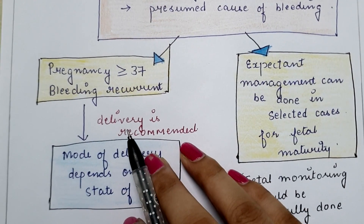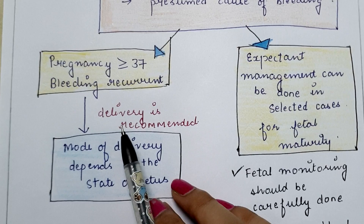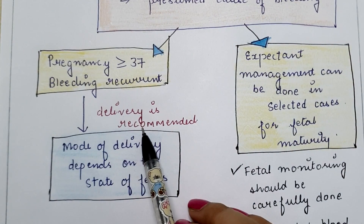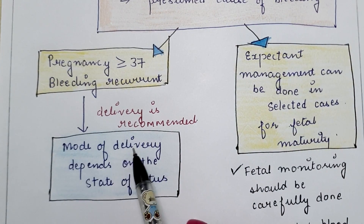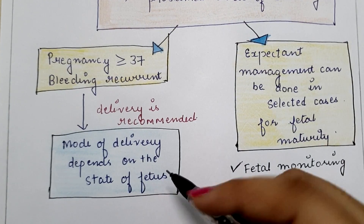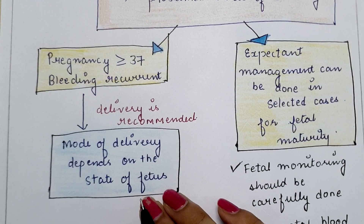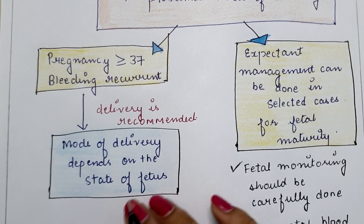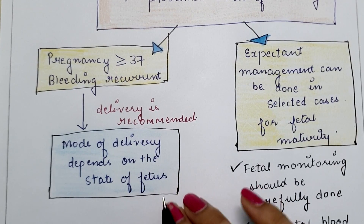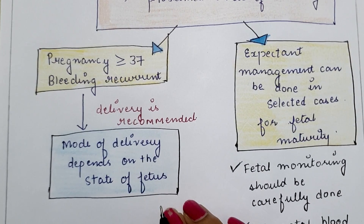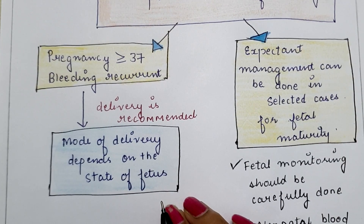The mode of delivery depends on the state of the fetus. If there is less bleeding or no continuous bleeding, vaginal delivery can be done by expert hands. But if there is recurrent or persistent bleeding, immediate cesarean section should be performed.